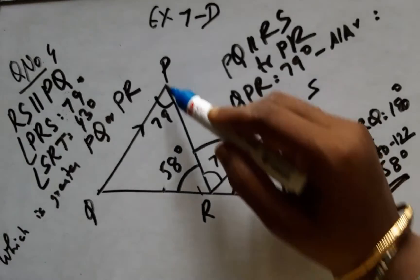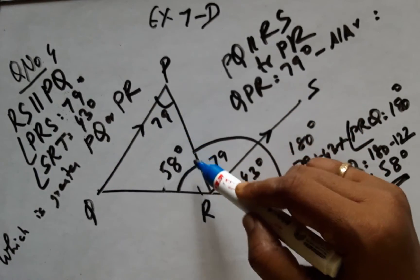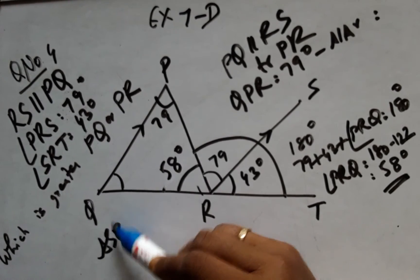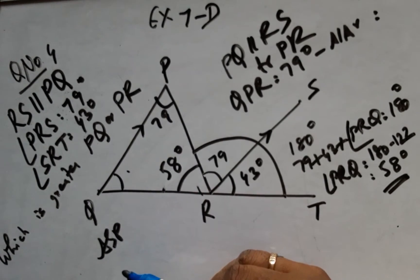Applying angle sum property because I am supposed to judge PR and PQ. By angle sum property, I have this angle value as 43 degrees.